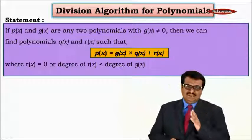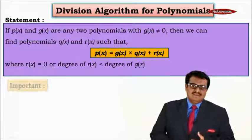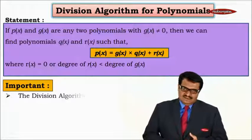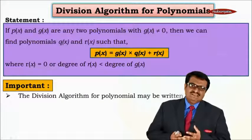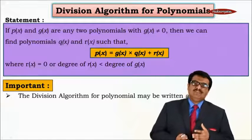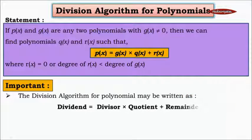This is the book definition. Let us understand it properly. The division algorithm for polynomials may be written as: dividend equals divisor into quotient plus remainder.